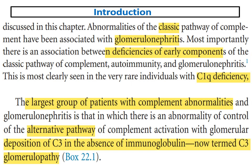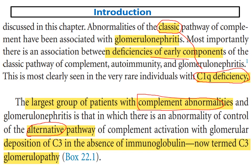These abnormalities in complement might be in the classic pathway or in the alternative pathway. An important example of abnormality in the classic complement pathway is C1Q nephropathy or C1Q deficiency. C1Q is an early component of the classic pathway which causes lupus-like manifestations, usually with nephrotic syndrome.